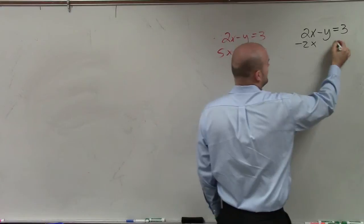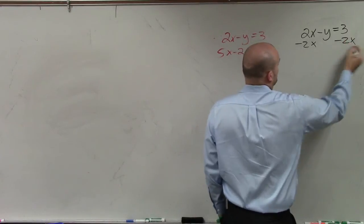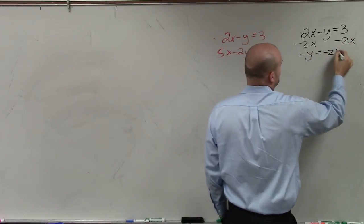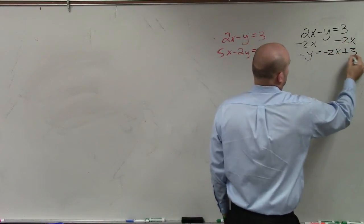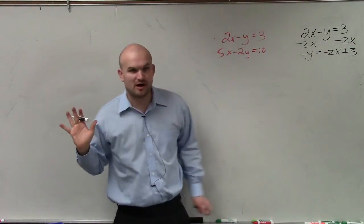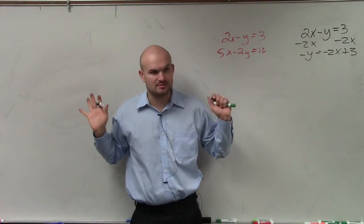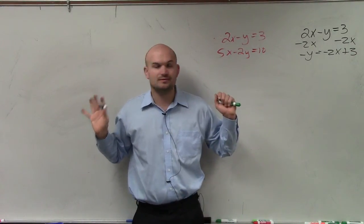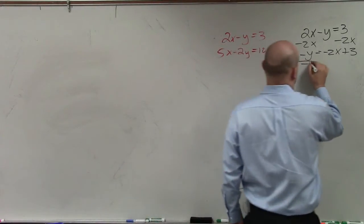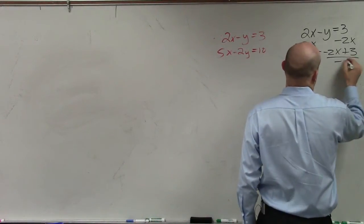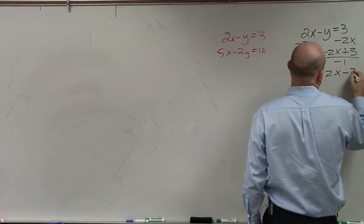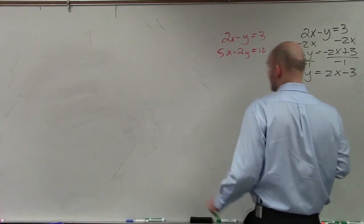Let's just subtract the 2x. Therefore, I have negative y equals negative 2x plus 3. Does everybody follow me? I'm just doing some solving equations. Then I divide by negative 1, and I have y equals positive 2x minus 3.